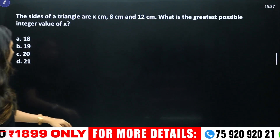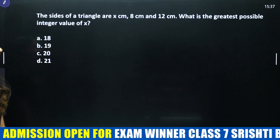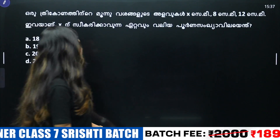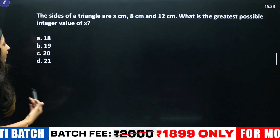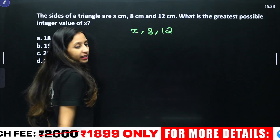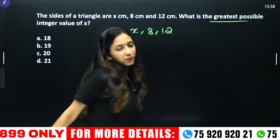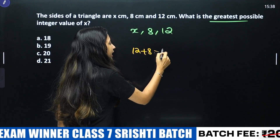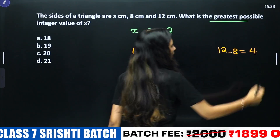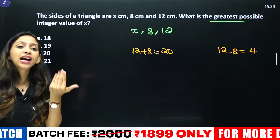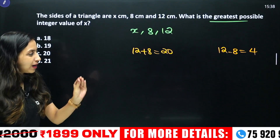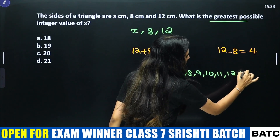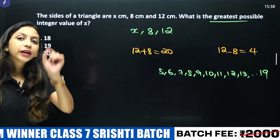The sides of the triangle are x cm, 8 cm, and 12 cm. What is the greatest possible integer value of x? We will work out the greatest value of x. Using the triangle inequality, the greatest integer value of x is 19. The possible integer values are 5, 6, 8, 9, 10, 11, 12, 13, 14 — and the greatest value is 19.